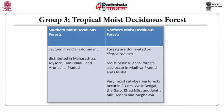Comparing tropical moist deciduous forests of the southern and northern regions: the southern moist deciduous forests are dominated by Tectona grandis, whereas the northern moist deciduous forests are dominated by Shorea robusta. The very wet moist sal-bearing forests occur in Sikkim, West Bengal, the Garo Hills, the Jaintia Hills, Assam, and Meghalaya.